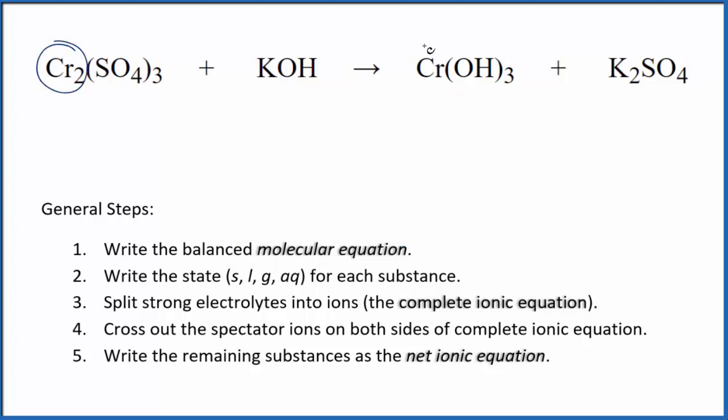I can see there are two chromiums here and just one here, so I'm going to put a 2 in front of the chromium(III) hydroxide. Now I have two chromiums, but I have two times three, so I have six hydroxides. I've got to put a 6 in front of the KOH.